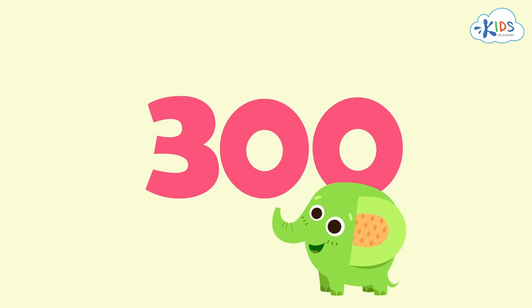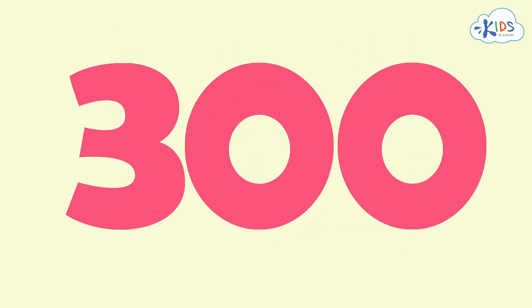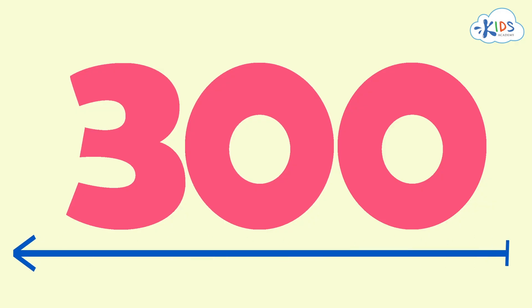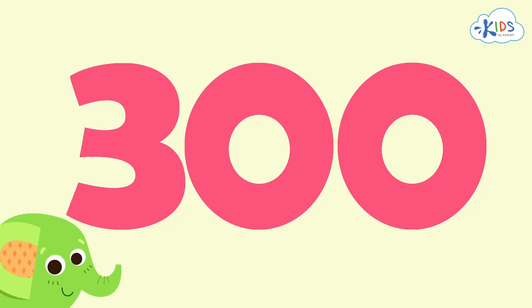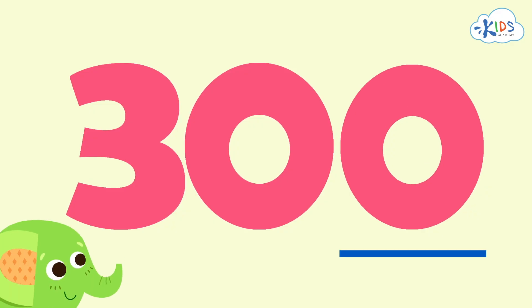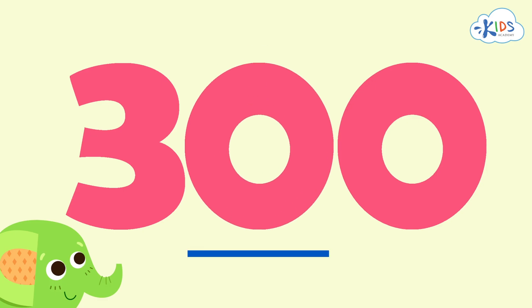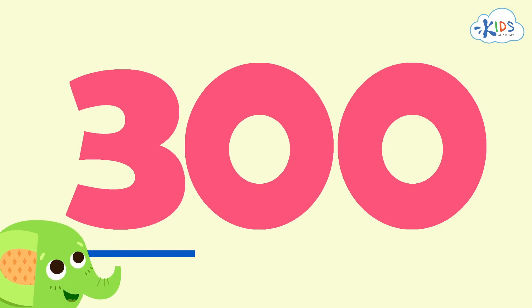Let's have a closer look at 300 to uncover the mystery of the hundreds place. The hundreds place is the furthest left in our number 300. Since there are no other digits of value in either the ones or the tens place, we can look right to the hundreds place. There is a 3 in the hundreds place.